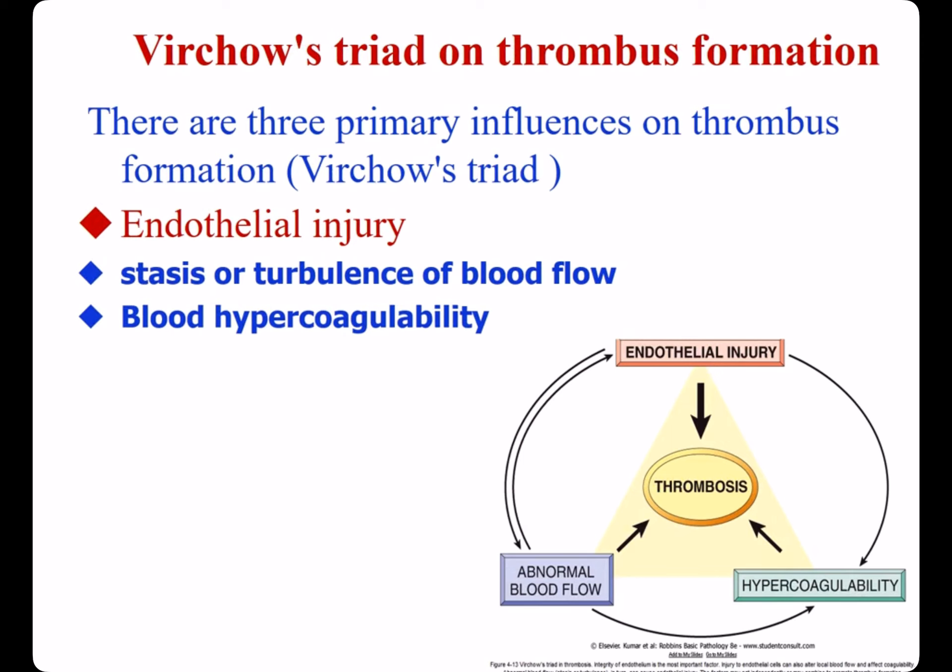Thrombosis is the pathologic form of hemostasis. There are three factors that influence thrombus formation: endothelial injury, stasis or turbulence of blood flow, and blood hypercoagulability.